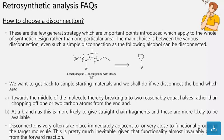We want to get back to simple starting materials and we shall do it with disconnections of bonds which are toward the middle of the molecule, thereby breaking into two reasonably equal halves rather than chopping off one or two carbon atoms from the end.